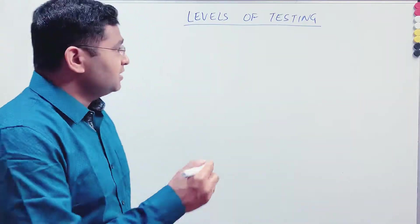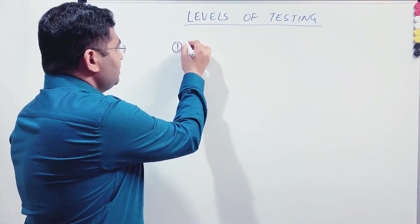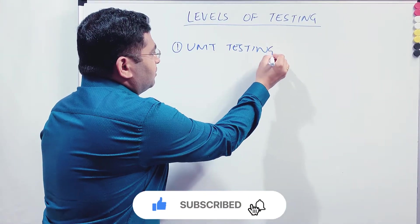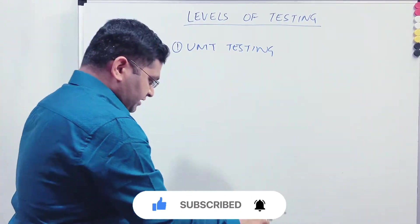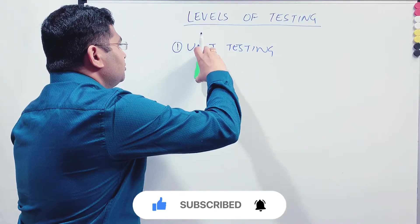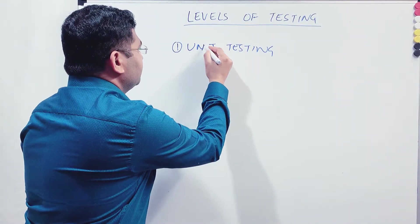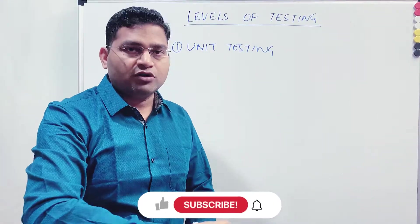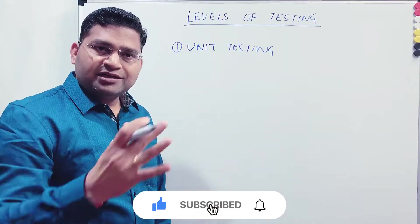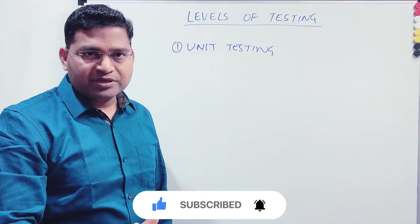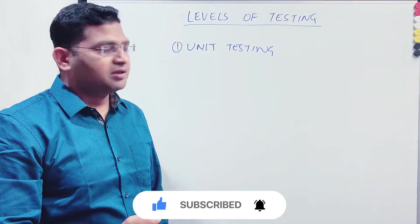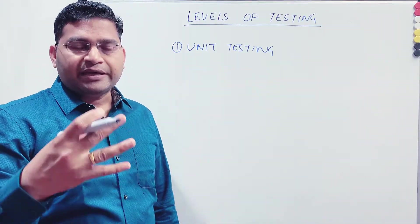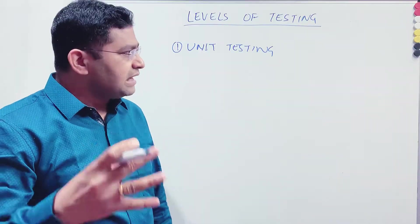The first level of testing is unit testing. So what happens in unit testing? Say, for example, you are building an eCommerce application. The eCommerce application will have a lot of functionalities. We'll take a login page example, which is the simplest to explain and understand. The login page will have the username and password fields, and the login button.